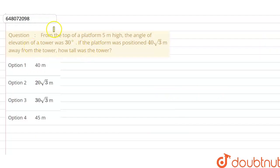Hello guys, we are going to solve this question. In this question, given that from the top of a platform 5 meter high, the angle of elevation of tower was 30 degree. If the platform was positioned 40 root 3 meter away from the tower, how tall was the tower?